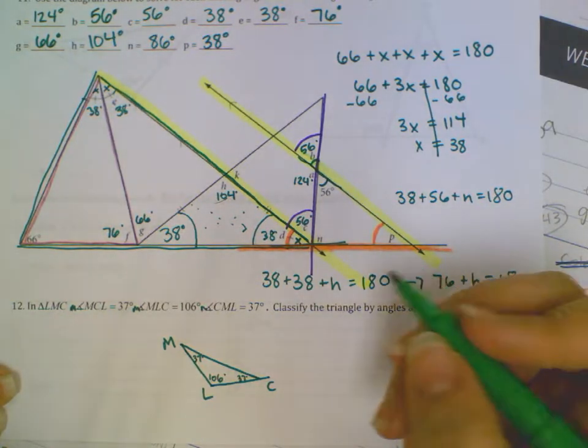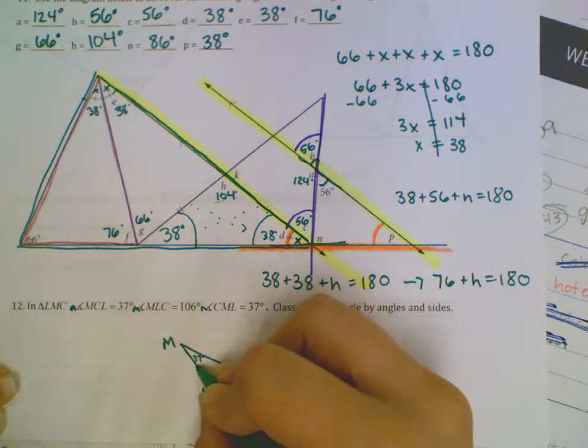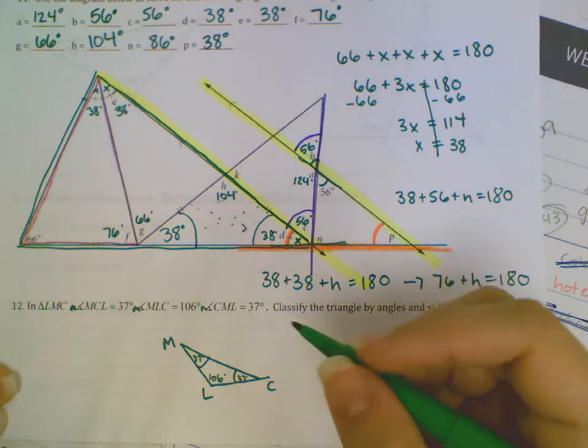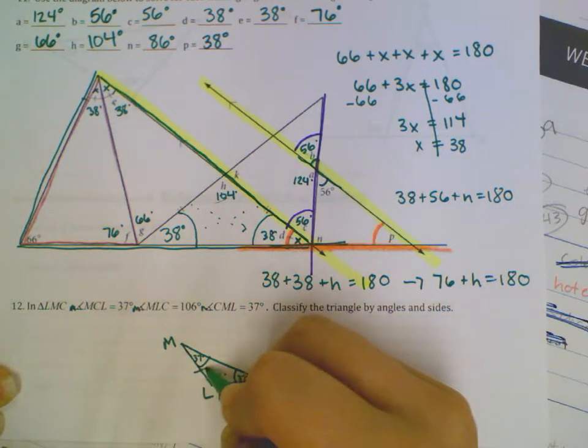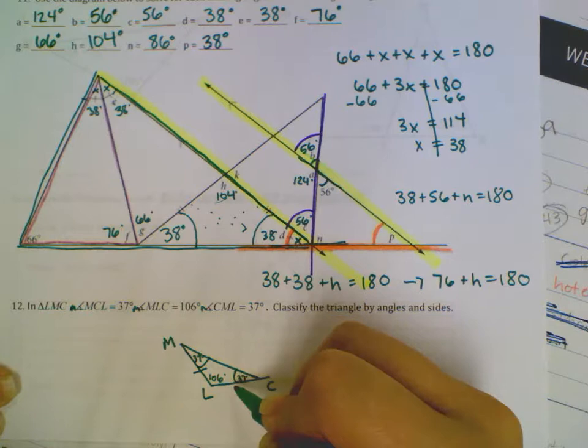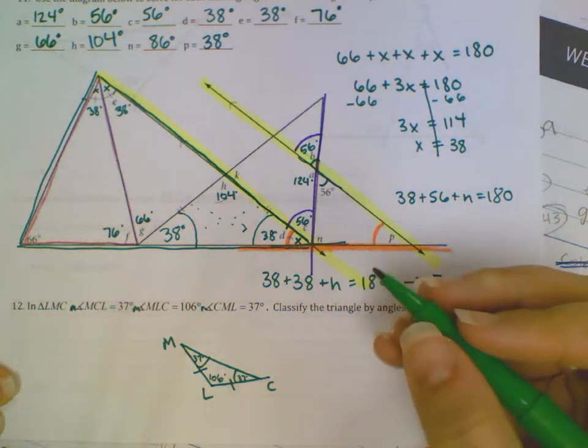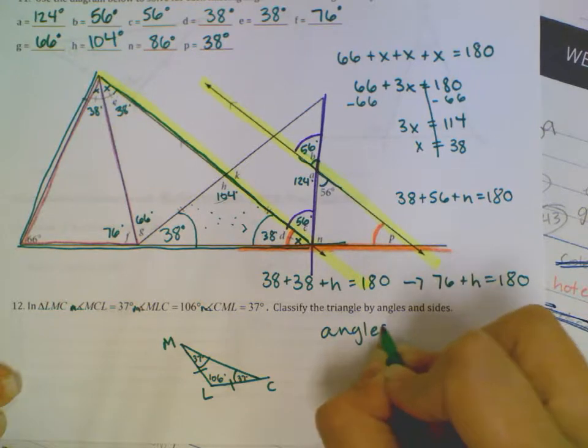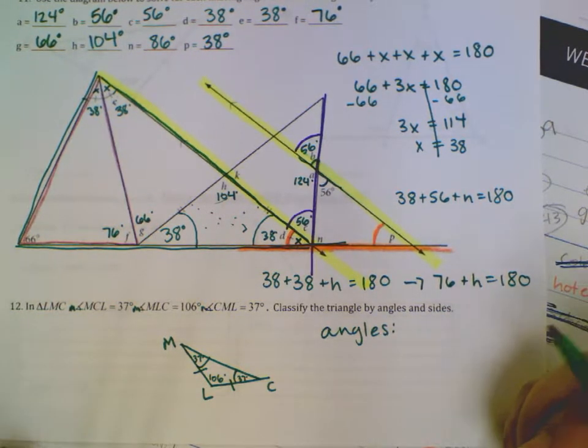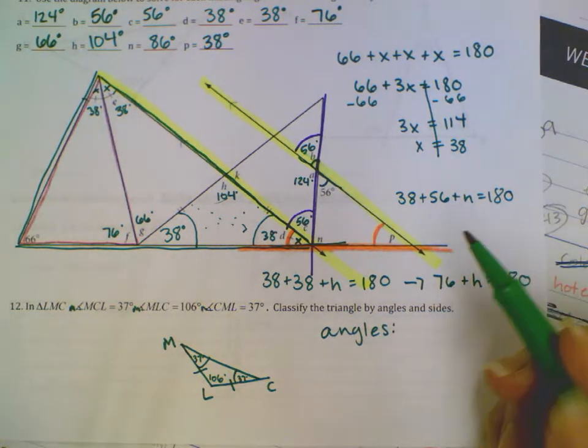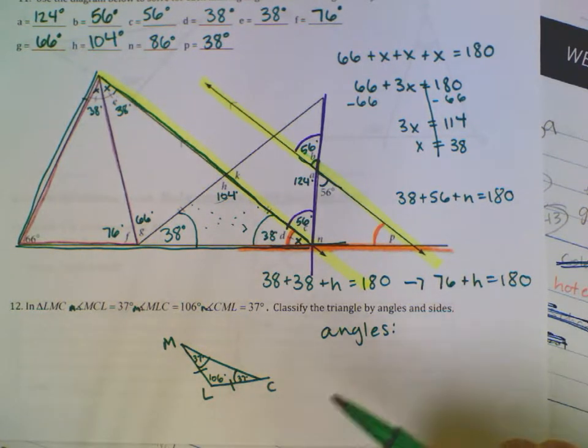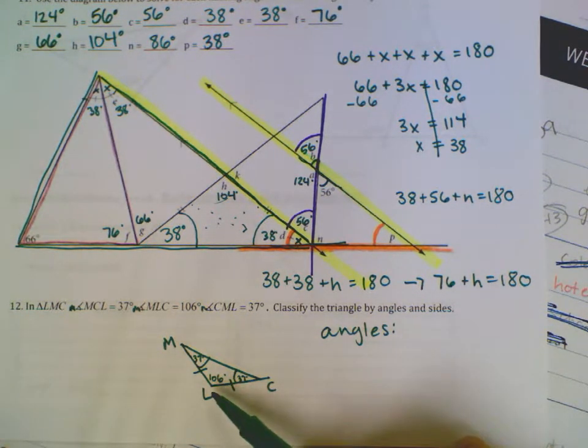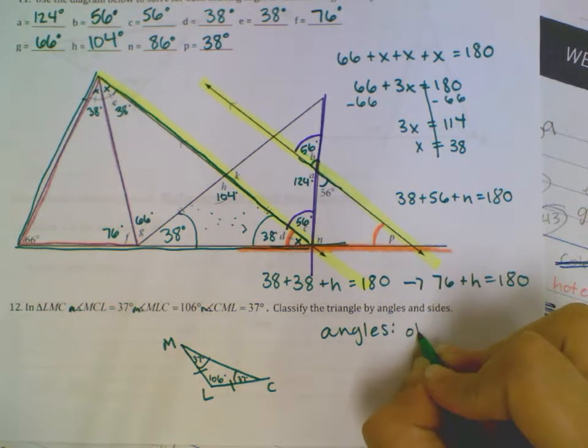Now, if I've got two angles that are both 37 degrees, I know that this is going to be an isosceles triangle, and across from each angle will be my congruent sides. So if I'm classifying the triangle by the angles, that'll be either a right triangle, an obtuse triangle, or an acute triangle. Acute means all the angles must be less than 90. I have one obtuse angle, so this must be an obtuse triangle.